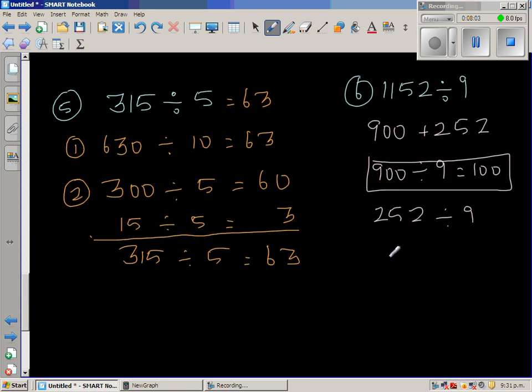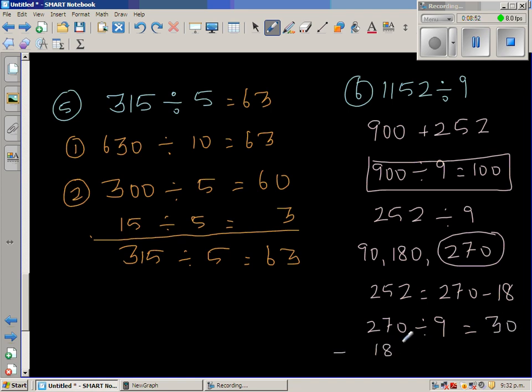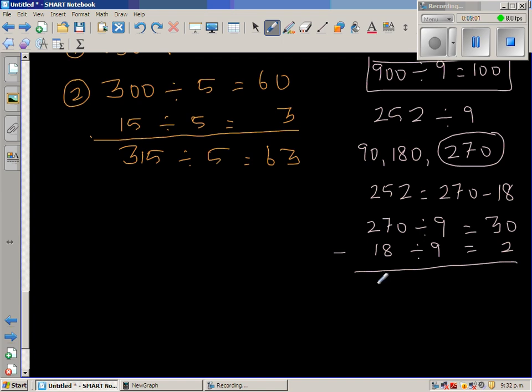So let us count in 90s. So 90, 180, 270. So I'm going to show you a different strategy here again. I'm going to say 252 is 270 minus how much. So 270 minus 10 is 260. So minus 18 would give me 252. So 270 take away 10 is 260 and 260 take away 8 is 252.